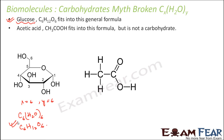Let us look at another example — acetic acid. The formula for acetic acid is CH3COOH. It has two carbons, so if you put X equal to 2 and Y equal to 2, it fits into this formula. But acetic acid is not a carbohydrate — it is an acid. So even though it fits the formula, it is not a carbohydrate.